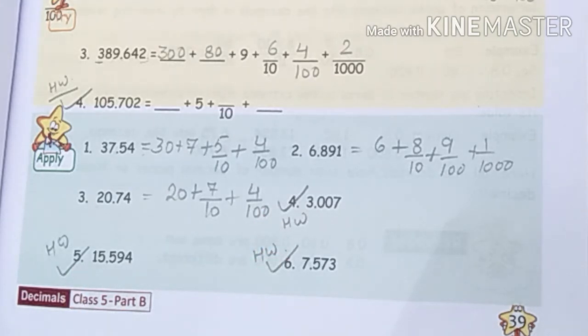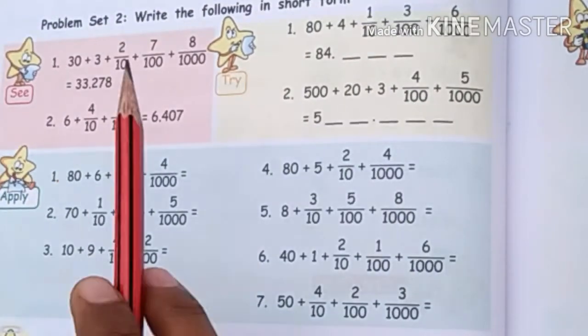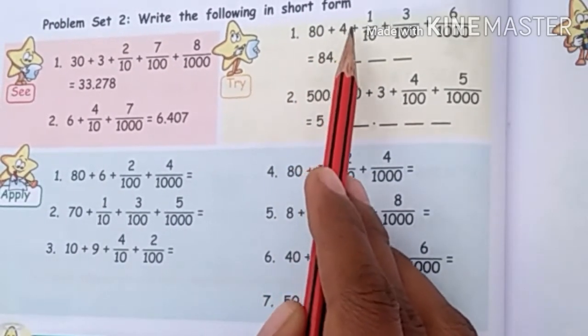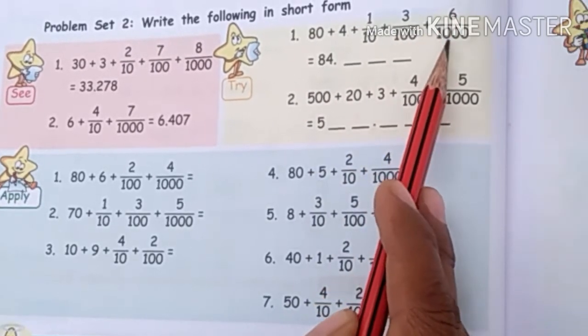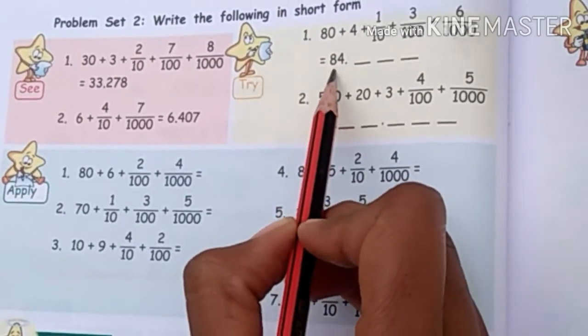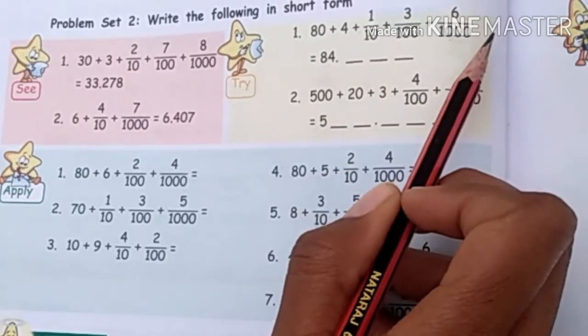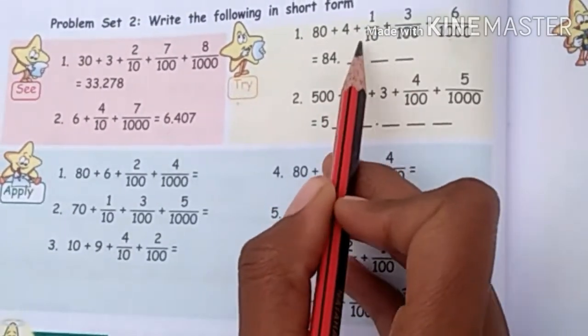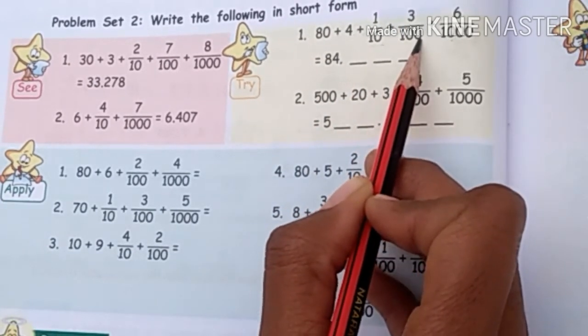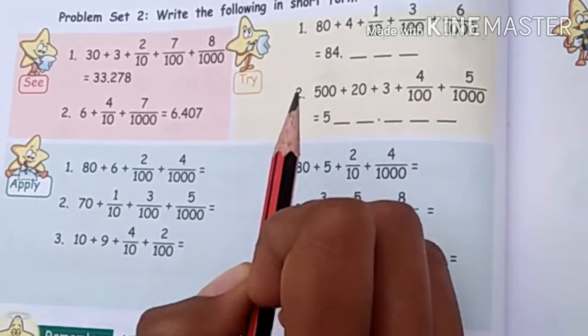Now let's do Problem Set 2: write the following in short form. You have just learned how to expand a decimal number — now you will see how to write it back in short form. The first question gives: 80 plus 4 plus 1 upon 10 plus 3 upon 100 plus 6 upon 1000. So 80 plus 4 gives 84. When the fraction part starts, that marks the decimal. If the denominator is 10, it is the first digit after decimal; if 100, the second digit; if 1000, the third digit.